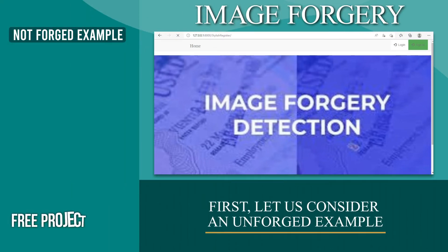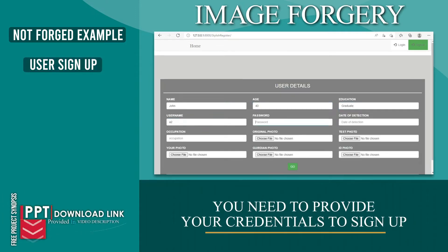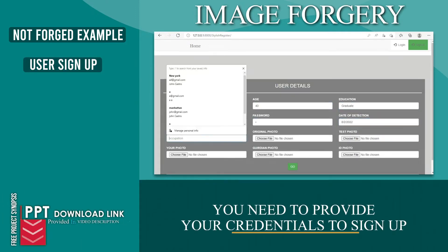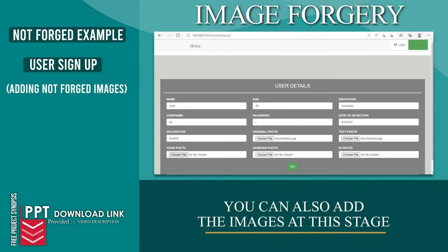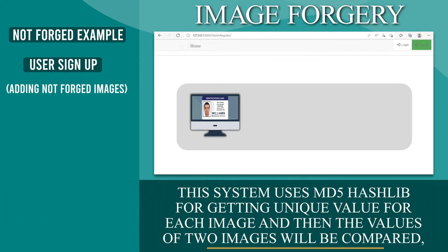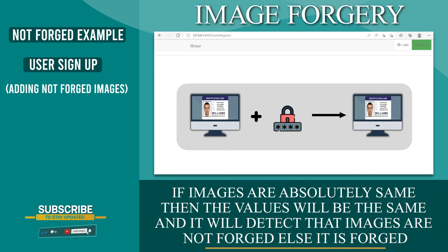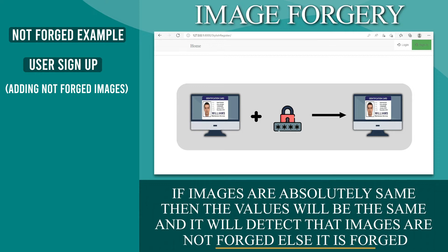First, let us consider an unforged example. You need to provide your credentials to sign up, and you can also add images at this stage. Once you add the image, the system uses the MD5 hash library to get a unique value for each image. The values of two images are then compared — if the images are absolutely the same, the values will match and the system will detect that the images are not forged; otherwise, it is forged.